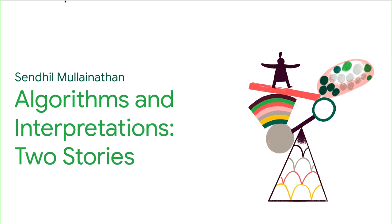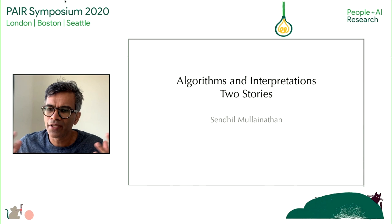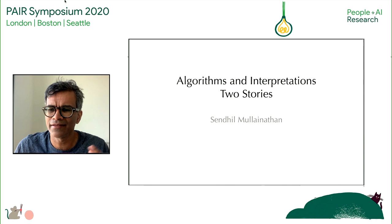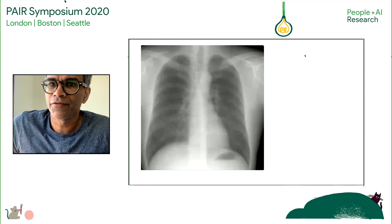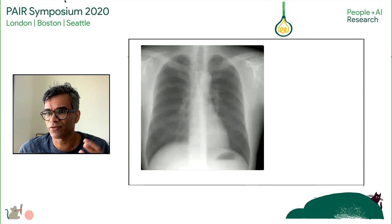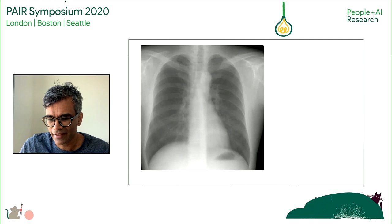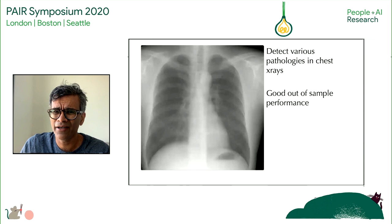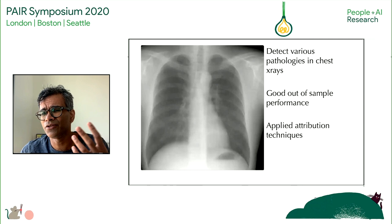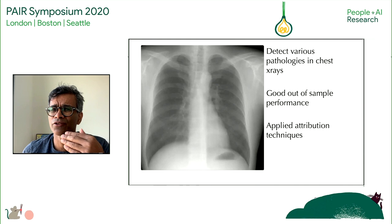What I want to talk about today is algorithms and how we interpret them — machine learning algorithms in particular — and I want to tell two stories. The first story is work a Google team did a few years ago, in the early days before there was a lot of work on ML applied to medicine. They had a huge data set with X-rays labeled for whether there was a problem, so they said: let's build a pathology detector. They found remarkable success — almost too good to be true. So they applied attribution techniques to see which pixels were most influential on the predictions.